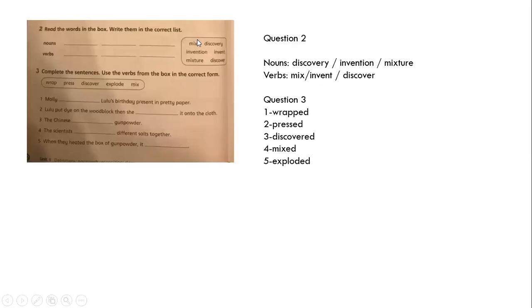Next question here, we have a box of words. We have mixer, mix, discovery, invention, invent, mixture, and discover. We are going to divide these words according to noun and verb. The nouns are discovery, invention, and mixture. The verbs are mix, invent, and discover.